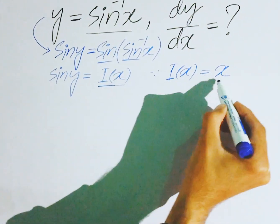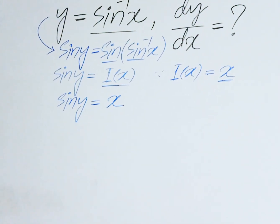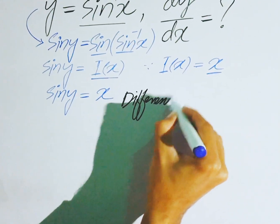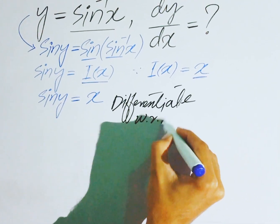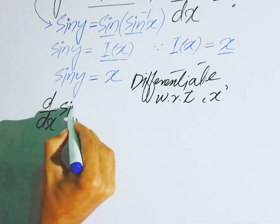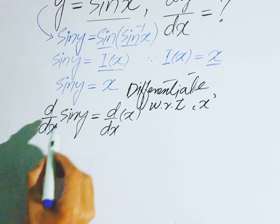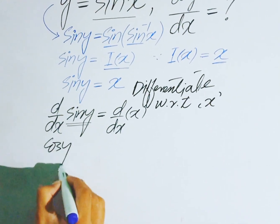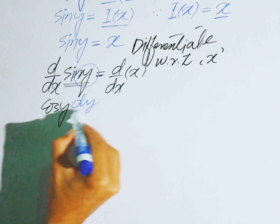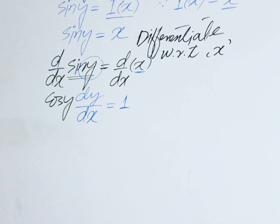Replace I(x) by x, so here we have sine y is equal to x. Now differentiate with respect to x because you need to find dy over dx. So differentiate with respect to x: d over dx of sine y, and the derivative of x.